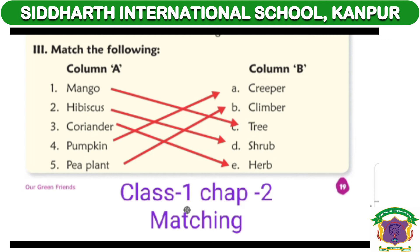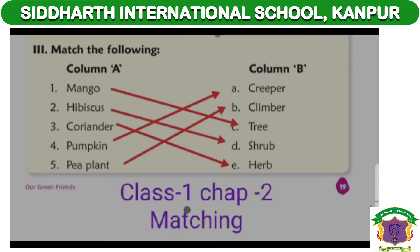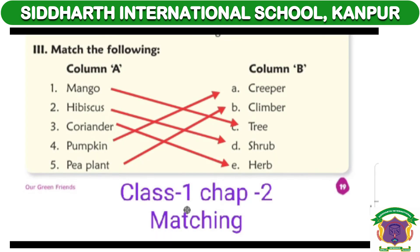Fourth number: Pumpkin (P-U-M-P-K-I-N). Fifth number: Pea Plant (P-E-A P-L-A-N-T).